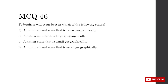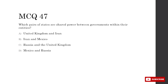Federalism will occur best in which state? Federalism means local governments represent regional interests with shared power. It works best in multinational states with different cultural viewpoints and large geographic states that tend to have more nations and larger populations. So A — large geographic multinational states — is correct. Which pairs of states see shared power between governments — i.e., which are federal states? UK is unitary, Iran is unitary, so eliminate those options. Mexico is federal, Russia is federal — so Mexico and Russia is the correct pair.